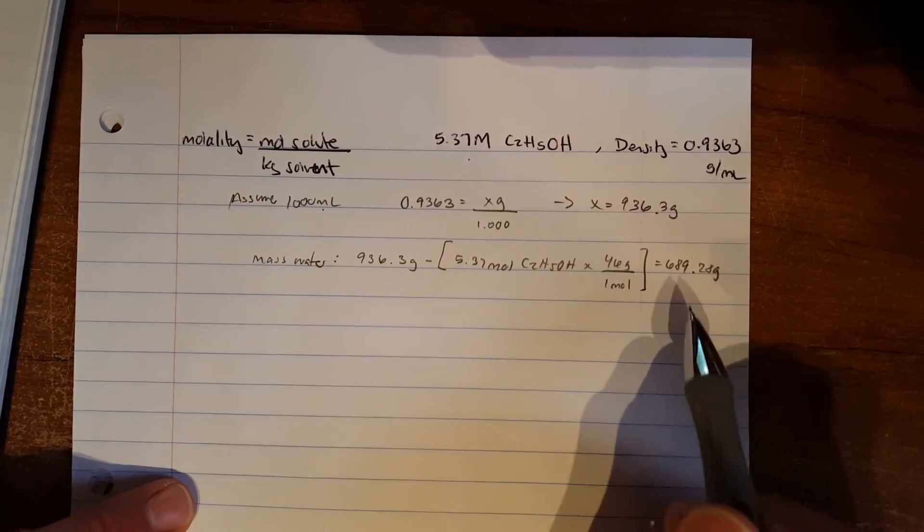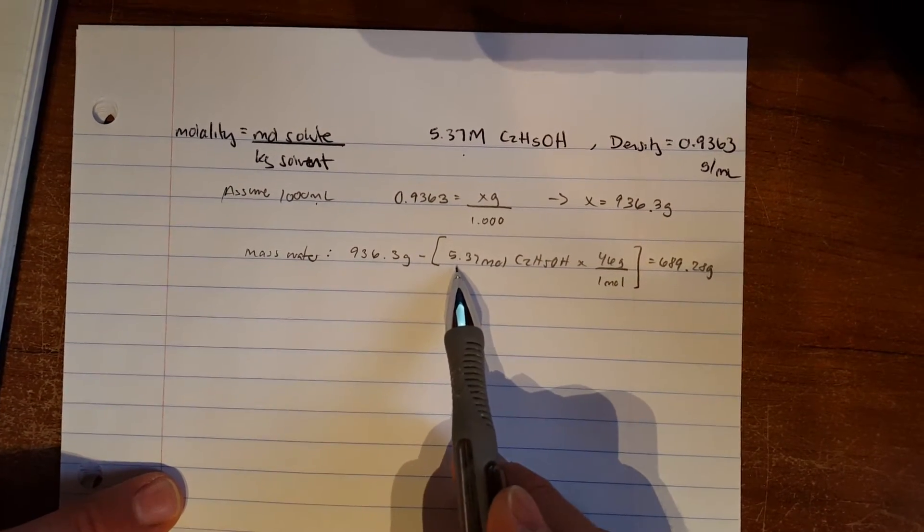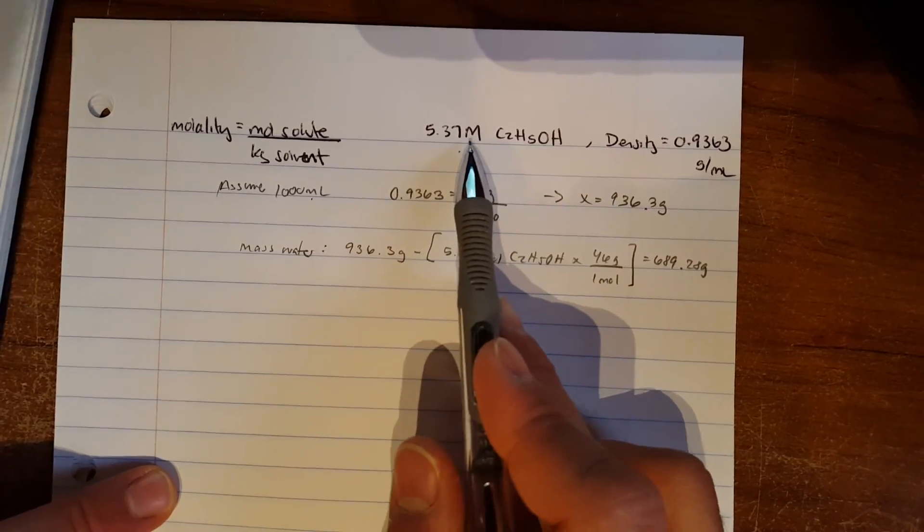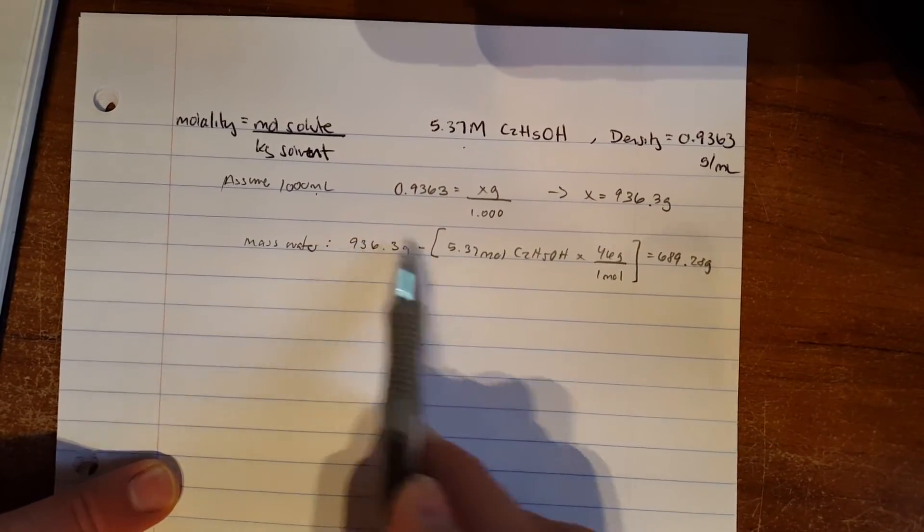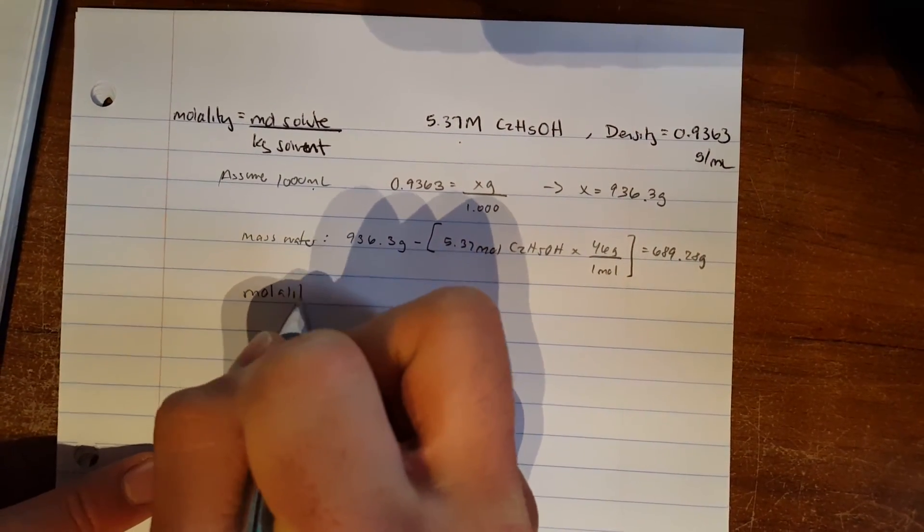This was the whole entire mass. We had to find the mass of the ethanol that was given to us by the molarity. We subtracted that from the total mass to give us the mass of water, so now we can solve for molality.